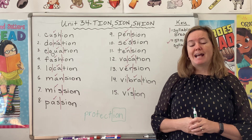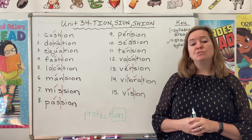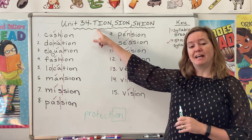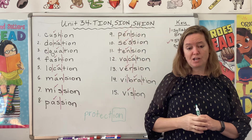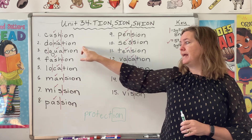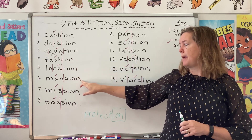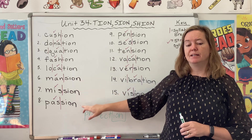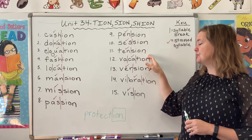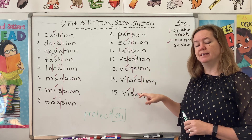Please repeat after me and as you do, use your ears to listen for that shun sound at the end of the word and use your eyes to notice whether that shun sound is being spelled with T-I-O-N, S-I-O-N, or S-H-I-O-N. Please repeat after me: cushion, donation, equation, fashion, location, mansion, mission, passion, pension, session, tension, vacation, vibration, vision.